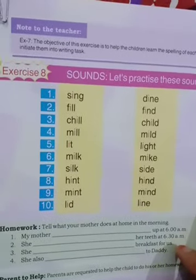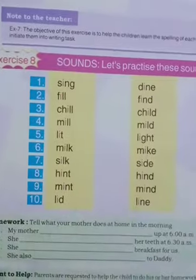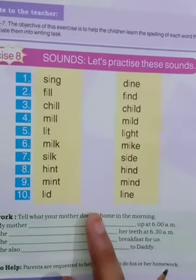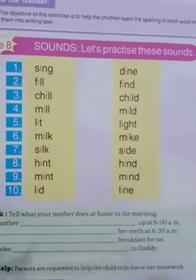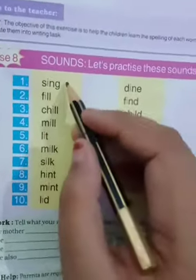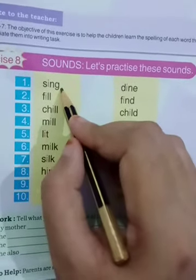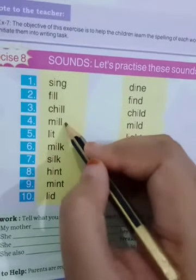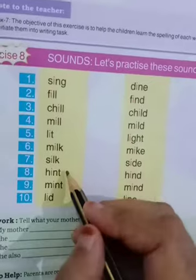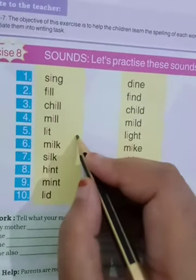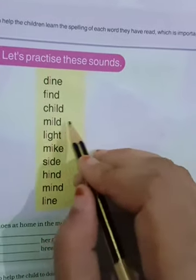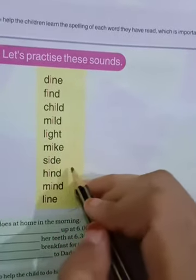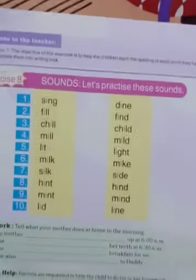Now it's practice and pronunciation time. The words given here — some are giving an 'e' sound and some are giving an 'i' sound. Let's practice: sing, fill, chill, mill, lit, milk, silk, hint, mint, lid — these all show the short 'i' sound. Now practice these: dine, find, child, mild, light, mic, side, hind, mind, line — these give the long 'i' sound. Do practice and complete your work.